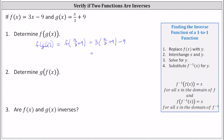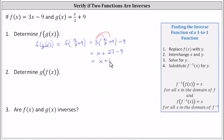This gives us 3 times the quantity x divided by 3 plus 9, minus 9. To simplify, we distribute 3: 3 times x divided by 3 equals x, and 3 times 9 is 27, minus 9. Simplifying, f of g of x equals x plus 18. Because f of g of x is not equal to x, we know right away that f of x and g of x are not inverses, so the answer to number three is no.